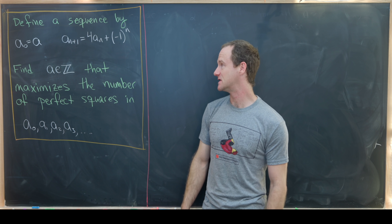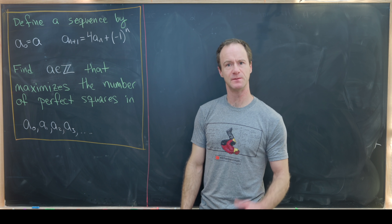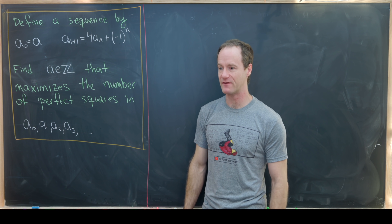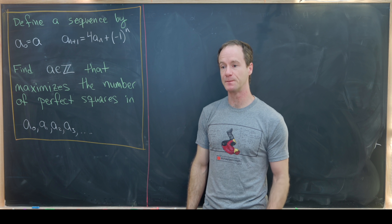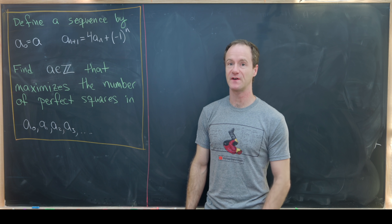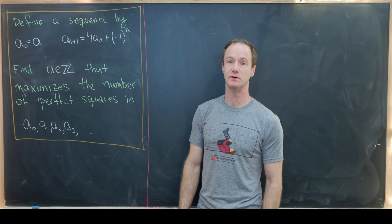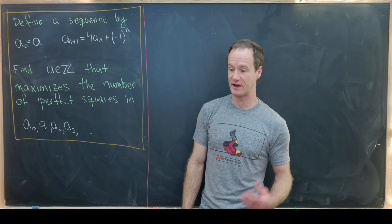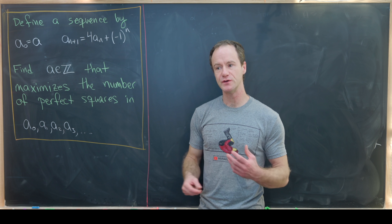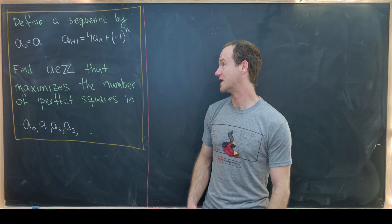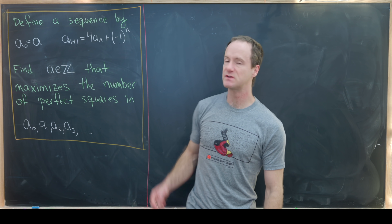Let's get into the solution. We're going to use a couple of key tricks: we'll first find a closed form for this sequence using generating functions, and then we'll use the notion of quadratic residues at the end.